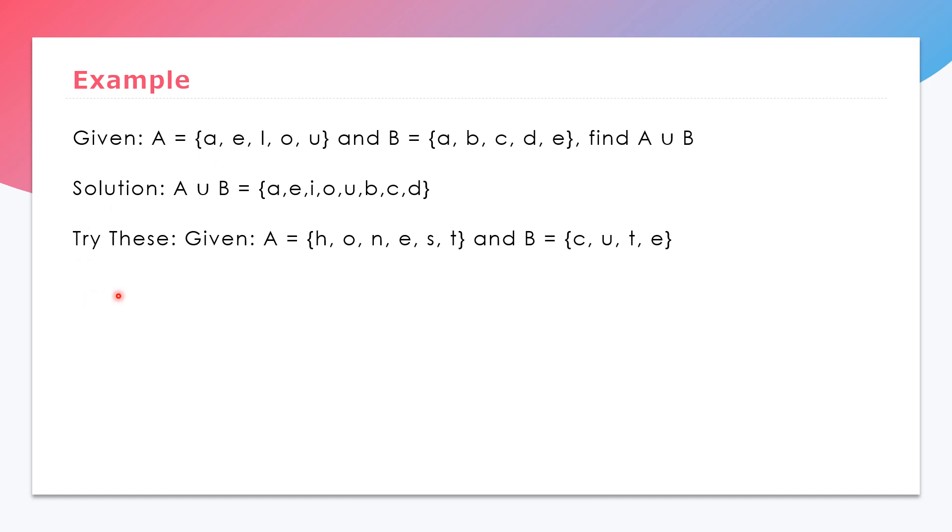Let us try this. Given A is {H, O, N, E, S, T} (honest) and set B is {C, U, T, E} (cute). If we are going to combine to look for A union B, that would be all we need is to combine: {H, O, N, E, S, T, C, U}. Because we have E here and E here, and also we have T and T here, so we just write each once. That's the union of sets.